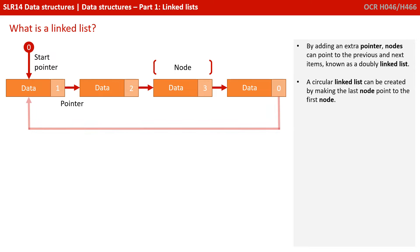A circular linked list can be created by making the last node point to the first node.